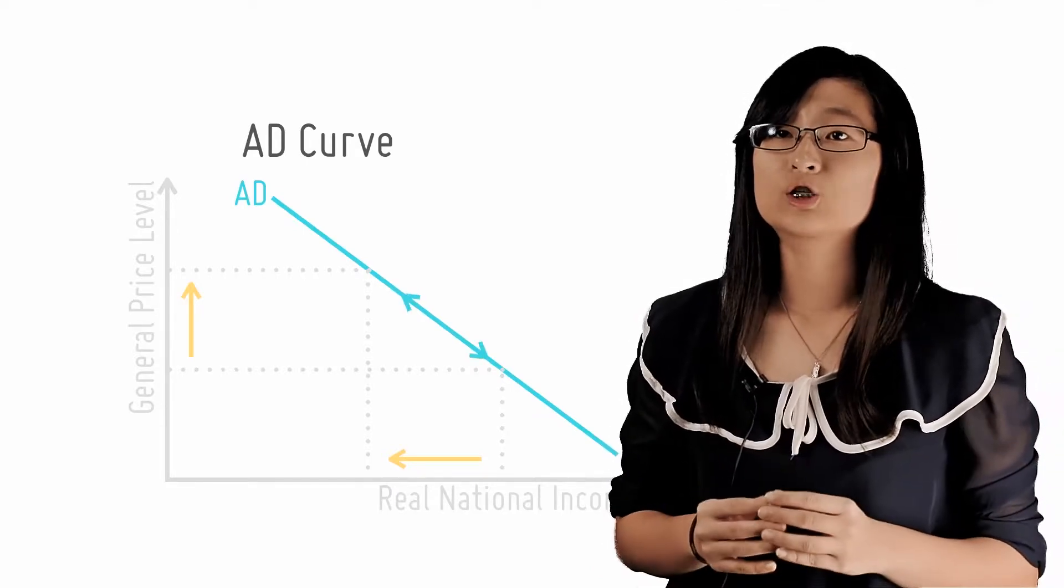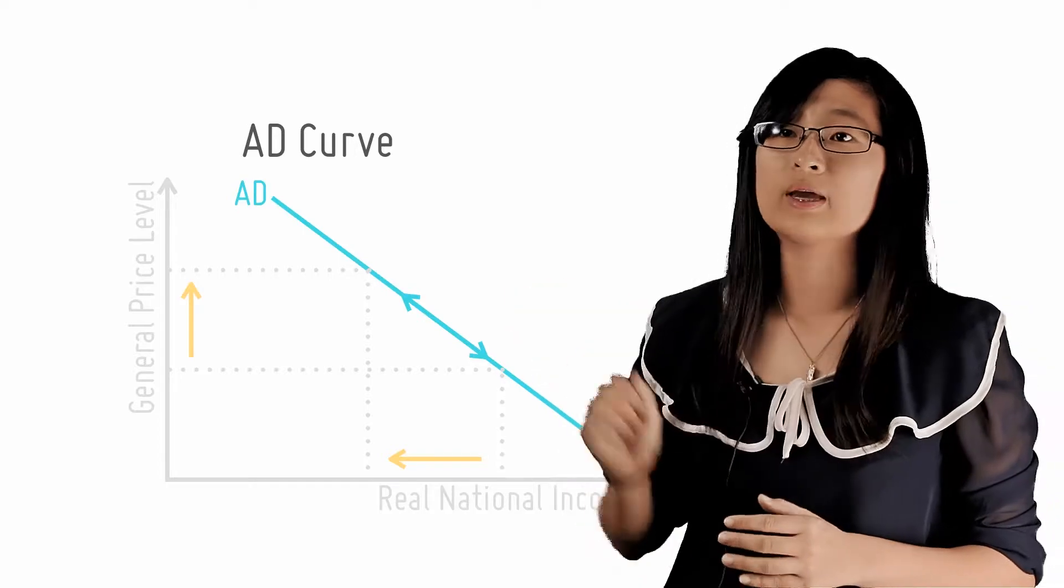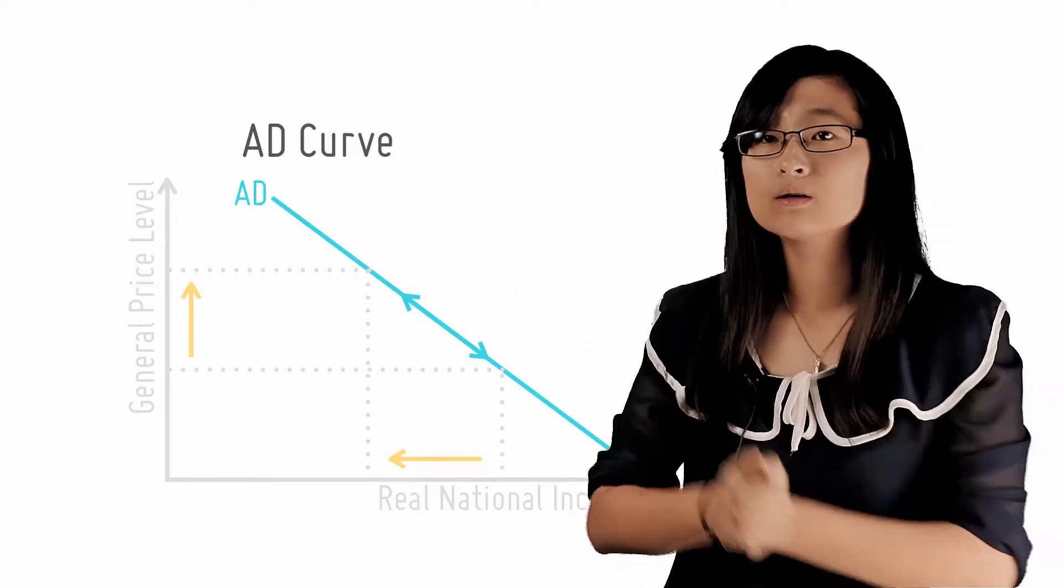Notice, however, that these changes essentially involve a movement along the AD curve. So what factors cause the entire AD curve to shift?